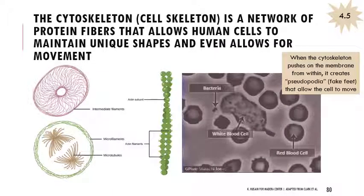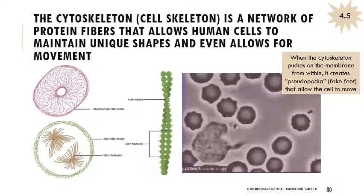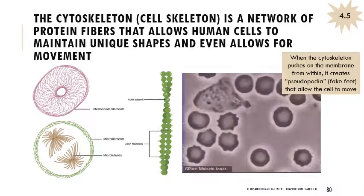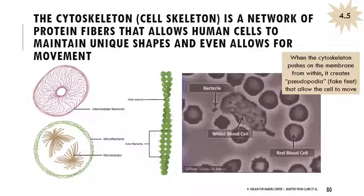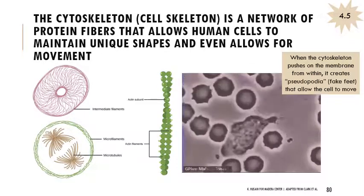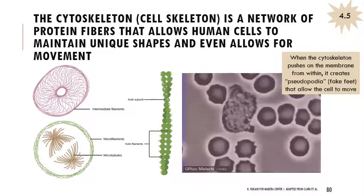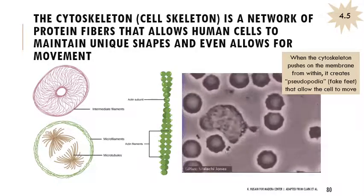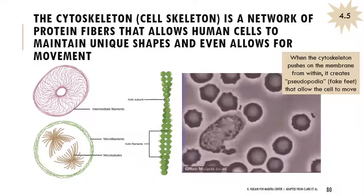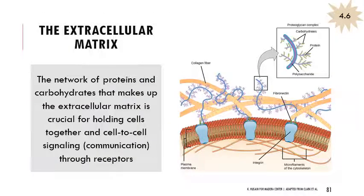The cytoskeleton — cyto means cell, skeleton is a support structure — is a network of protein fibers that allows our cells to maintain a certain shape. If you think about muscle cells, skin cells, bone cells, and neurons, they all look so different, and part of that is because they have this cytoskeleton inside of them. We have things like filaments, microtubules, and actin that come together to form this supportive structure inside our cells. This GIF is showing a white blood cell chasing a bacterial cell through our bloodstream. The white blood cell moves its cytoskeleton from the inside, pushing out projections, allowing it to chase the bacterial cell until it engulfs it. Outside of the cell, we also have the extracellular matrix — a bunch of proteins and carbohydrates.